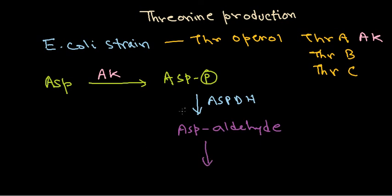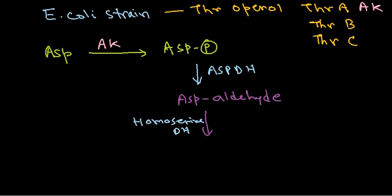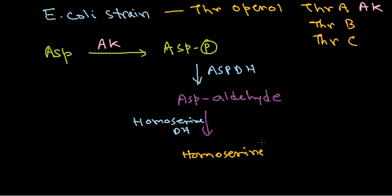This time the dehydrogenase activity is mediated by homoserine dehydrogenase, or HDH. Homoserine dehydrogenase converts aspartyl semialdehyde into homoserine. So from aspartyl semialdehyde, homoserine dehydrogenase acts to produce homoserine.